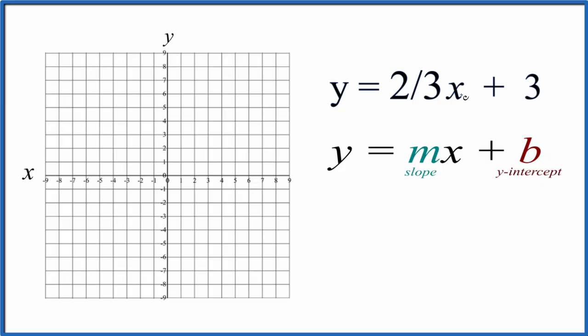You could use a table of values, put something in for x, and then figure out the y value and plot those. That works, but when you have a fraction like two-thirds, that gets to be kind of a pain. So let's use slope-intercept formula.